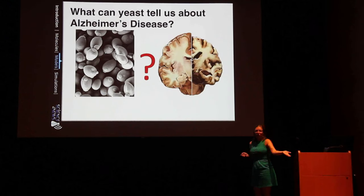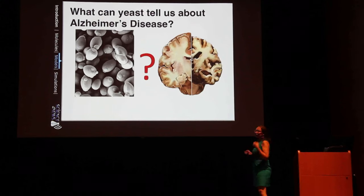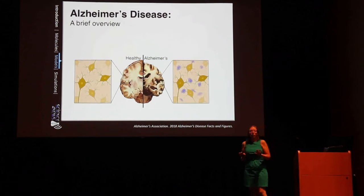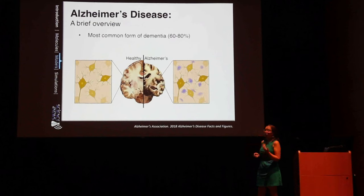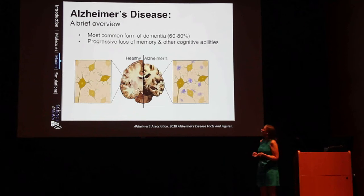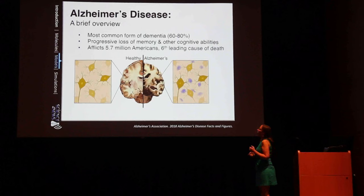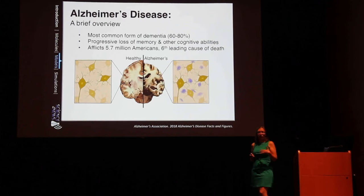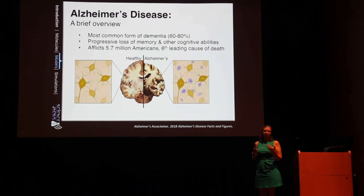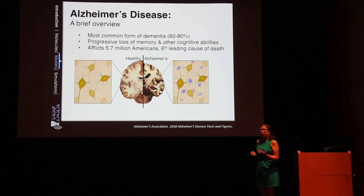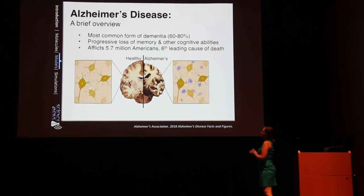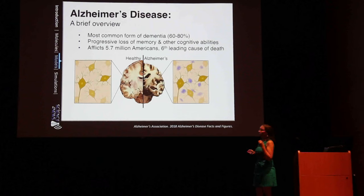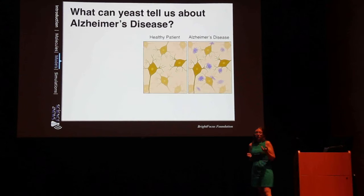So what can this little organism that you can literally buy off the shelf in the grocery store tell us about a disease as complex as Alzheimer's, which affects an organ as intricate as the human brain? Alzheimer's is the most common form of dementia, affecting memory and other cognitive functions, and it affects millions of Americans. As we get better at treating infectious diseases and life expectancy increases, we see more prevalence of aging-related diseases like Alzheimer's. In the brain of an individual with Alzheimer's, normal healthy tissue forms characteristic clumps of protein — a hallmark of this disease.